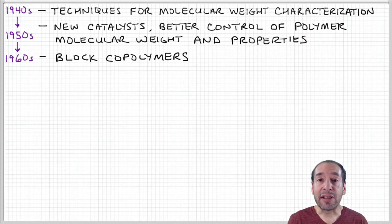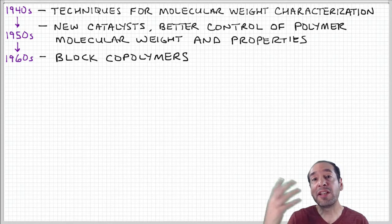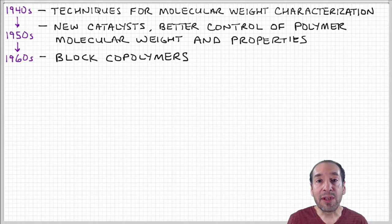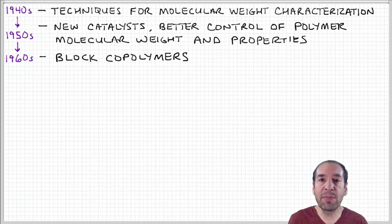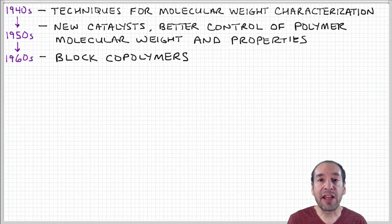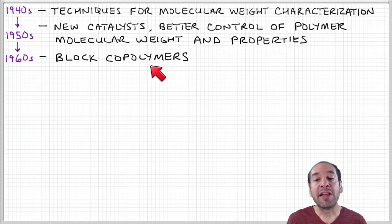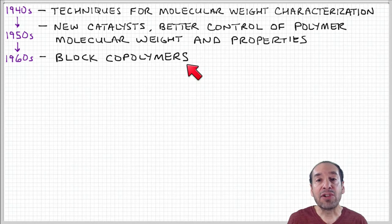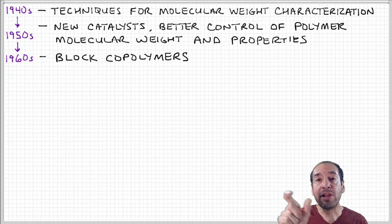These are all important things that need to be done at a massive scale if you're going to produce a large quantity of these kinds of materials. Block copolymers were another innovation — the idea that instead of having one kind of monomer unit repeated along the polymer chain, you could have two or more different kinds of monomers repeated along the chain in different orders.